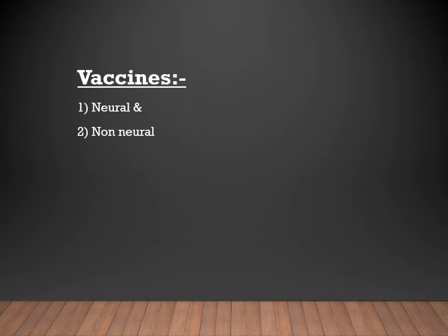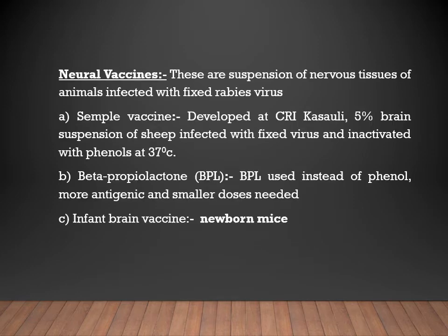Vaccines are of two types: neural and non-neural. Neural vaccines are prepared from the nervous tissue of animals infected with fixed rabies virus, then inactivated with a chemical. The simple vaccine developed at CRI Kasauli uses a 5% sheep brain suspension inactivated with phenol. The beta-propiolactone vaccine uses beta-propiolactone instead of phenol and is more antigenic. The infant brain vaccine uses neural tissue of newborn mice infected with fixed virus.